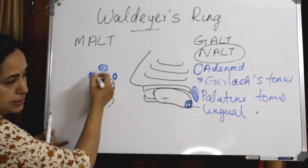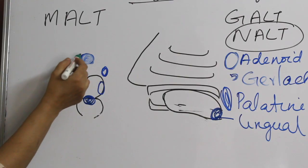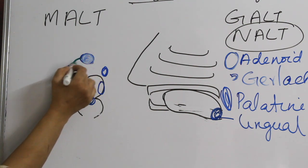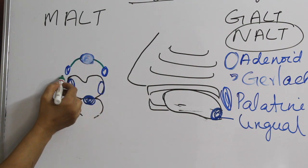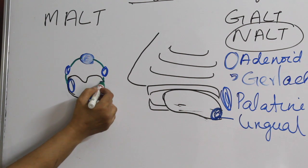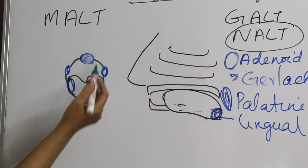So imagine this as a ring. You can imagine this as a ring which is connected with the adenoid, then comes the tubal tonsils or the Gerlach tonsils on both sides, then your palatine tonsils, and after that comes the lingual tonsils. So this becomes the Waldeyer's inner ring.